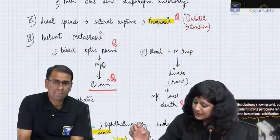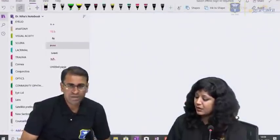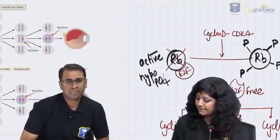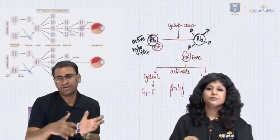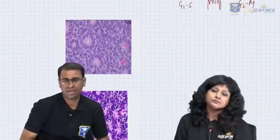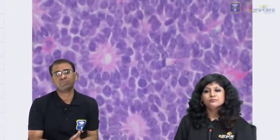After orbital extension leading to proptosis, the tumor can spread through the optic nerve — which is the most dangerous aspect. Once it reaches the optic nerve, it can extend to the brain at any time. That is why we always send an optic nerve biopsy to determine the extent of disease, since the treatment regimen depends on the extent. Spread can be hematogenous to the liver, or direct via cranial nerves — through the optic nerve to the brain. Being a PNET, histopathology shows rosettes.